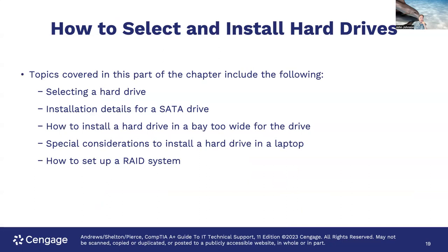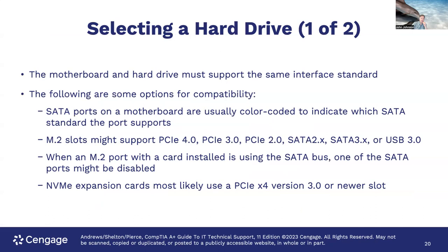Topics covered in this part of the chapter include: selecting a hard drive, installation details for a SATA drive, how to install a hard drive in a bay too wide for the drive, special considerations for installing a hard drive in a laptop, and how to set up a RAID system. The RAID system details here are a bit weak — there's a lot more to consider with RAID, like the number of drives needed and how many can fail while retaining data.